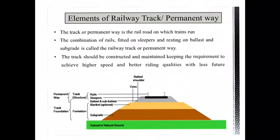The picture here shows the various components and elements of the permanent way. The track or permanent way on the rail is nothing but the railroad on which the train runs. It is a combination of rails fitted on the sleeper, which rests on the ballast and the subgrade. The combination of all these things we call the permanent way.